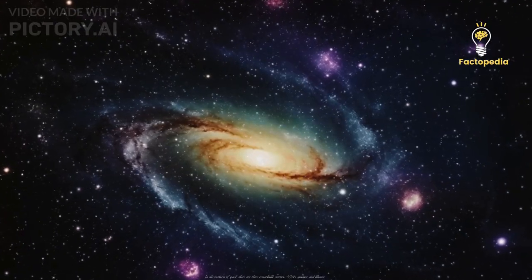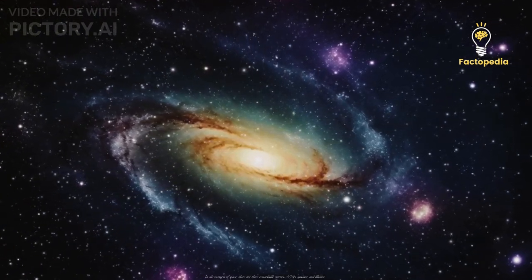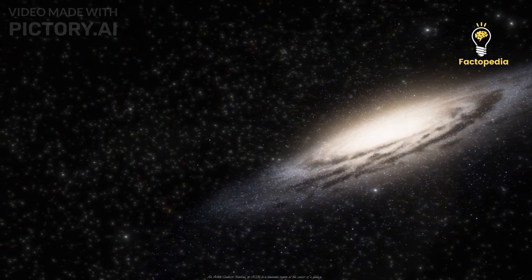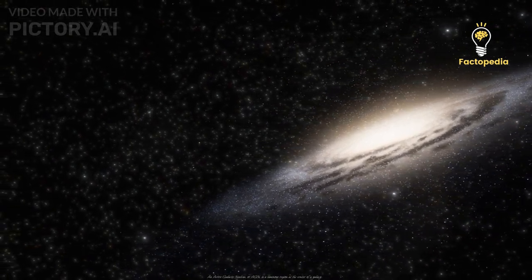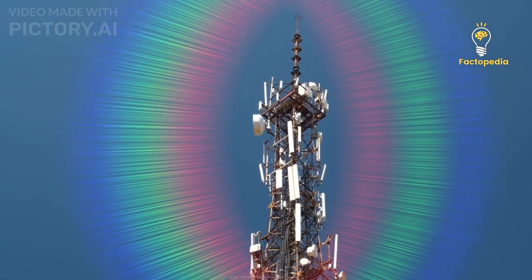In the vastness of space, there are three remarkable entities: AGNs, quasars, and blazars. An active galactic nucleus, or AGN, is a luminous region at the center of a galaxy, emitting radiation across the electromagnetic spectrum.